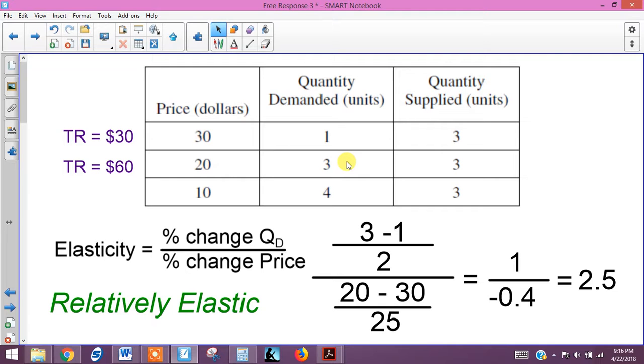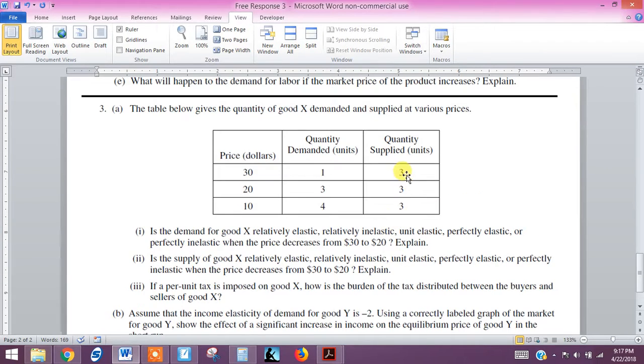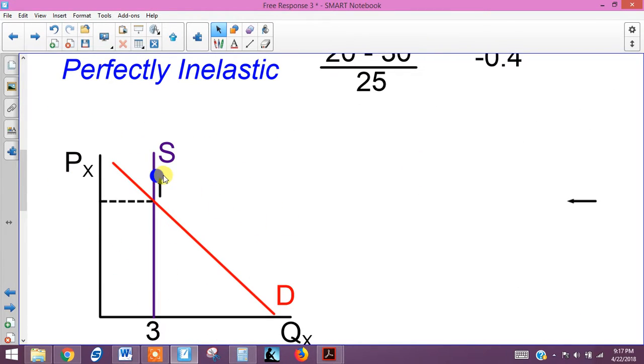Okay, so that takes care of part 1. Part 2, we're looking at the elasticity of supply. Now we can see right away, let me jump back over here, that the supply curve is vertical. It's stuck at a quantity of 3, so it looks like this. Let me get this out of the way for right now.